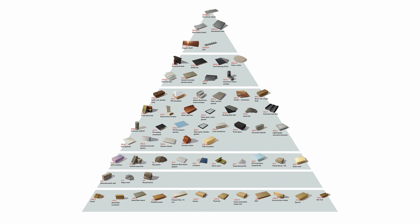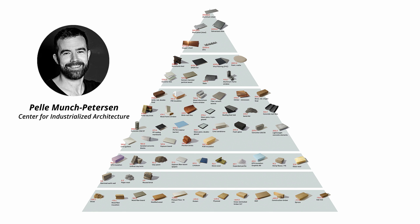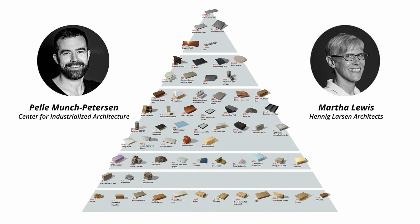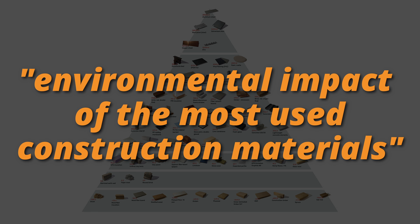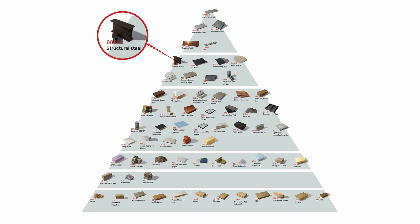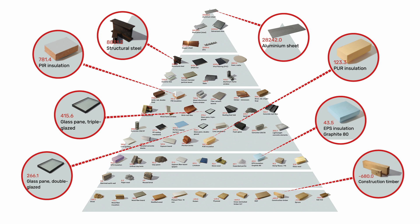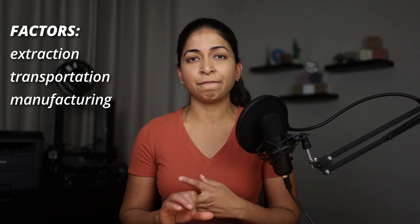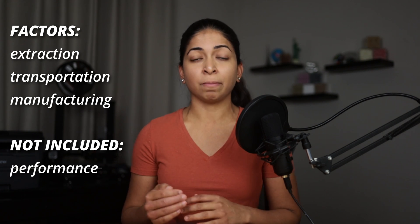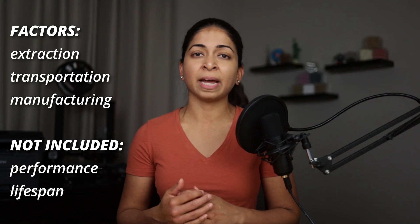The Construction Material Pyramid was developed in 2019 by the Center for Industrialized Architecture and Henning Larsen Architects. It highlights the environmental impact of the most used construction materials like structural steel, aluminum, double and triple-paned windows, insulation, lumber, and more. The data driving this pyramid is based on extraction, transportation, and manufacturing — it does not take performance and lifespan into account.